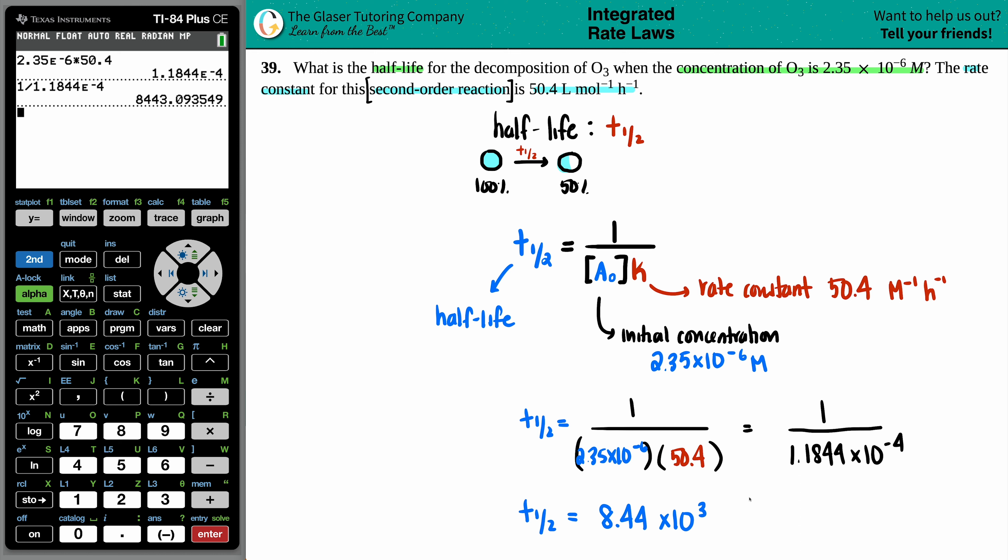Now the unit here, 8,440, what? Seconds, minutes, hours, years, months? It has to be a unit of some time. But always go back to your rate constant to find out the time unit in there. In the time unit for the rate constant, it was H. H stands for hours.